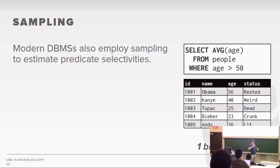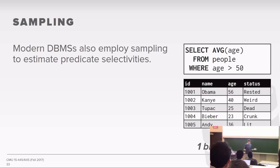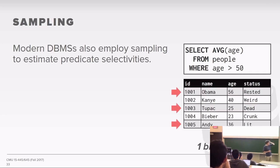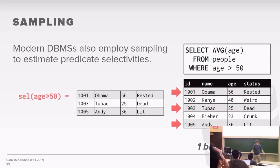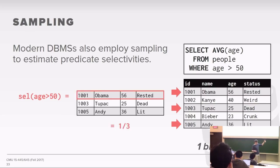An alternative to maintaining histograms is sampling. When your query shows up, you peek ahead and look at the table you're going to scan, randomly pick a small subset of it, examine the data, and figure out the actual selectivity for the predicates you're trying to run. You make a copy into memory, scan through the sample, and find the number of entries that satisfy your predicate. Then you extrapolate: if you know the selectivity in the sample, that approximates the selectivity on the true data. This is actually what the commercial systems do that the open source systems don't — SQL Server does this and has the best query optimizer.